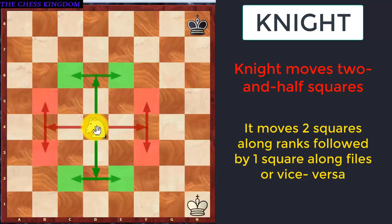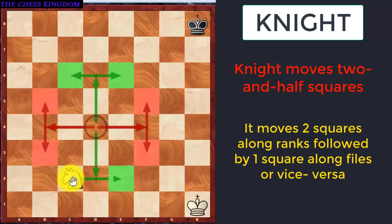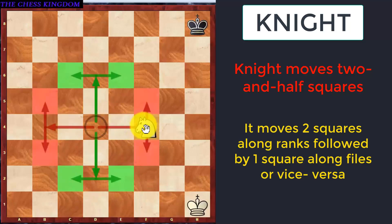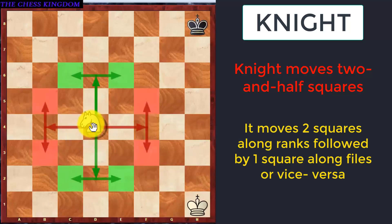If you see the green colored arrow, the 2 squares is along the vertical followed by 1 square along the horizontal. Similarly, if the 2 squares are along the horizontal, that is along the Ranks, then the 1 square will be along the Files. So this is the movement of the Knight.